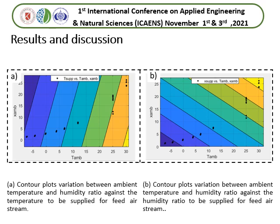These are the contour plots for the supply temperature and supply humidity ratio for the feed stream. They show a linear relationship with ambient humidity and outside temperature and outside humidity ratio.